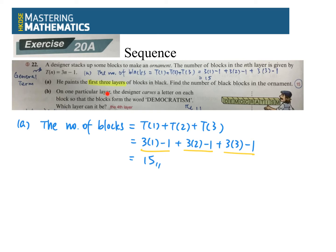On one particular layer, the designer carves a letter on each block so that the blocks form the word DEMOCRATISM. Which layer can it be? 這些字也多, 意思很簡單. 它說其中有一層, particular layer, 那個設計者刻了一些字下去.